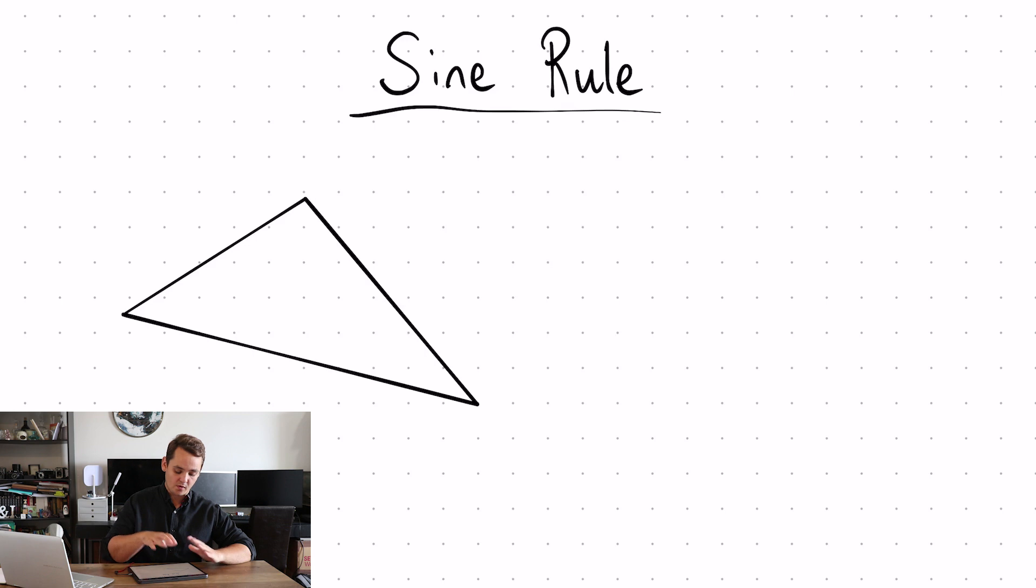And within those triangles we label up our sides lowercase a, lowercase b, lowercase c, and the angles which are opposite those sides are given the capitals. So capital A, capital B, and capital C. So opposite side to angle.